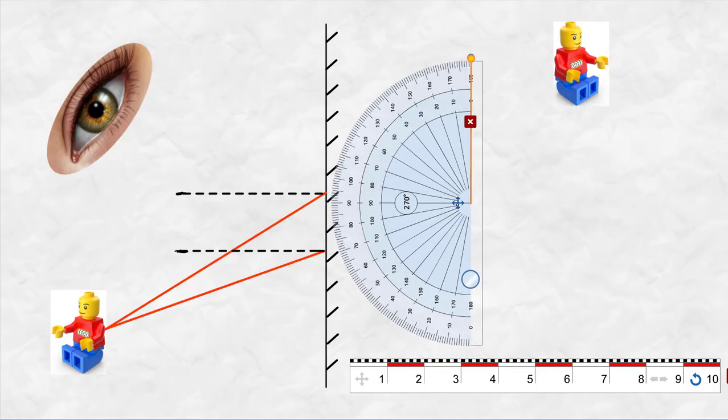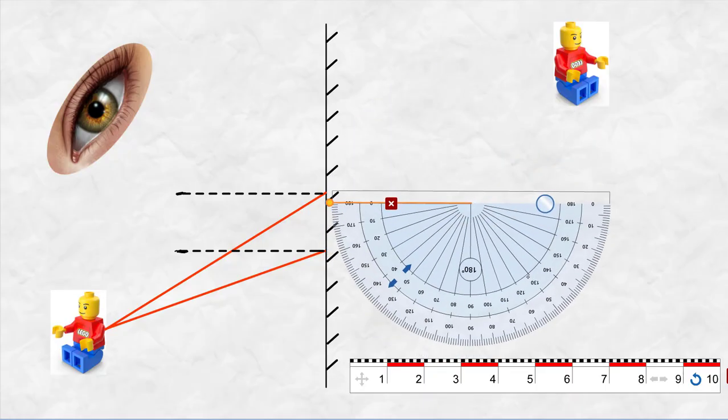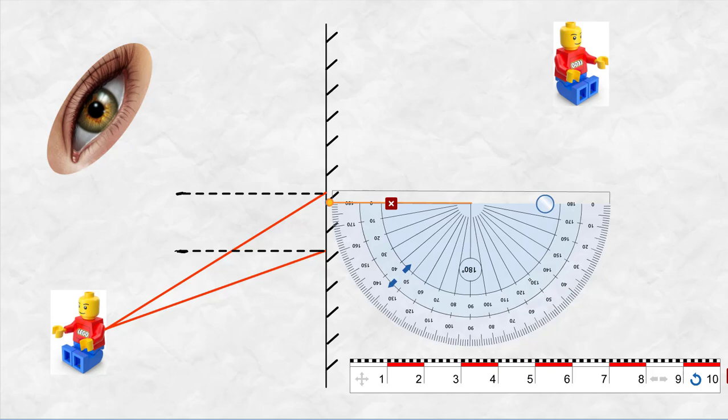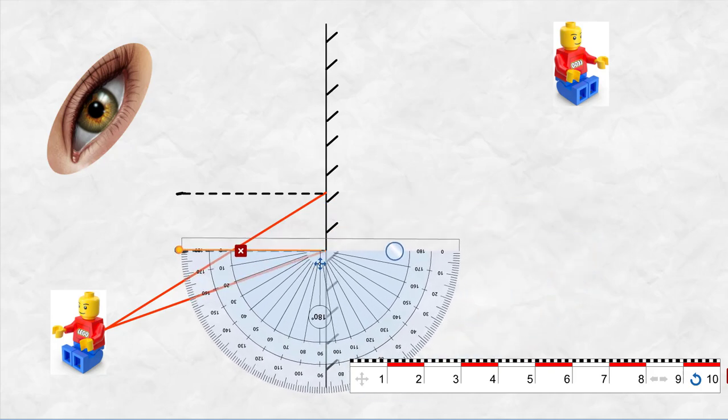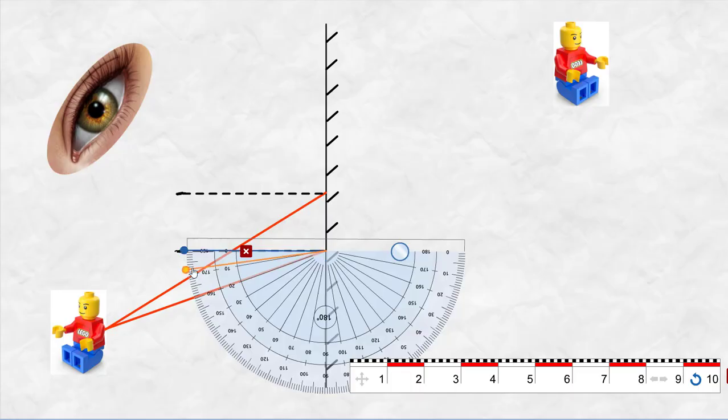Now we need to take our protractor again and line up the zero along the normal, because that's where we measure from, and we're going to measure the angle of incidence of the first ray. That comes out as being 19 degrees. It's important to use the correct scale. This time I'm having to use the inside scale because it starts from zero there and I'm not measuring from 180.